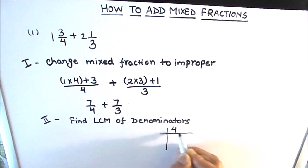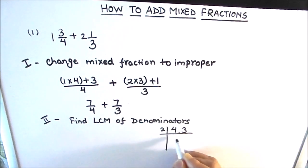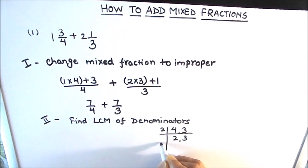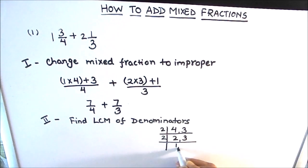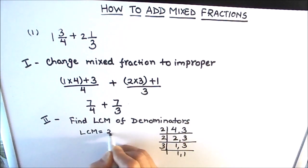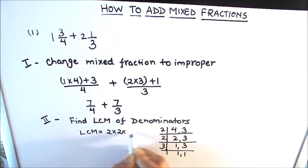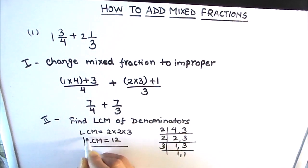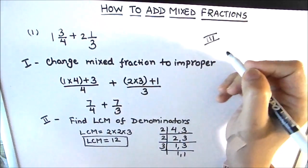So for 4 and 3, we divide by 2: 2 × 2 = 4, and 3 stays as is because 3 is not fully divisible by 2. Then 2 × 1 = 2, and 3 stays as is. Then 3 × 1 = 3. So the LCM will be 2 × 2 × 3 = 12. So the LCM is 12.